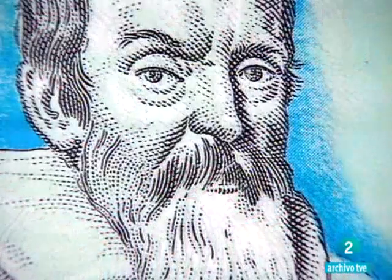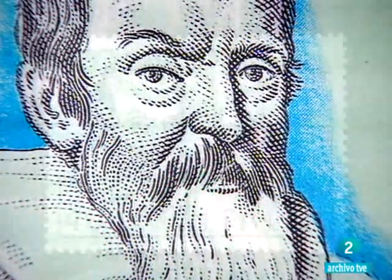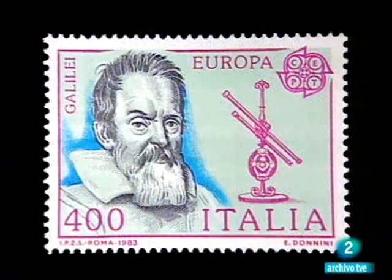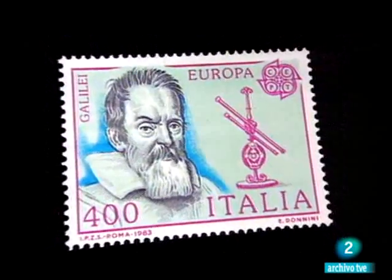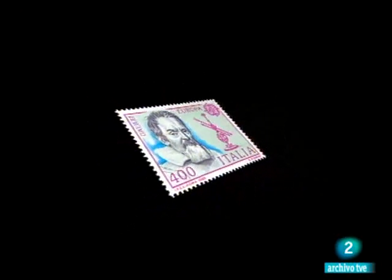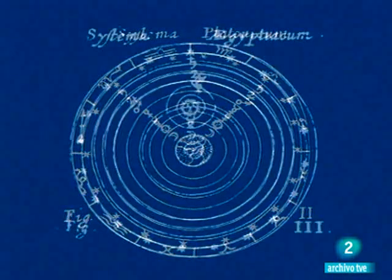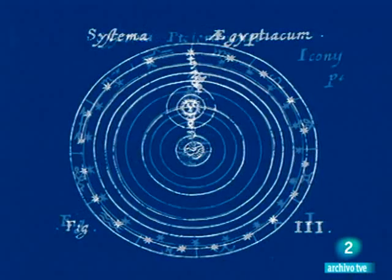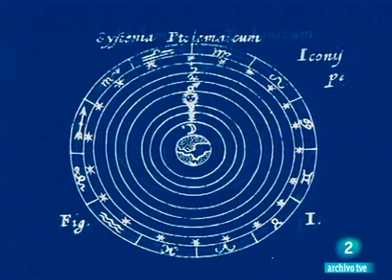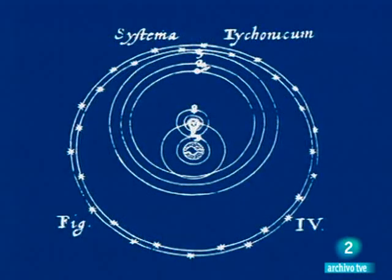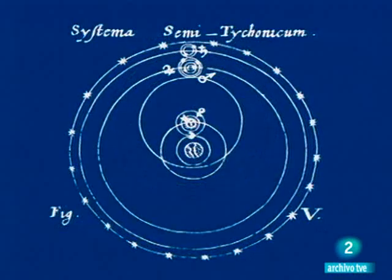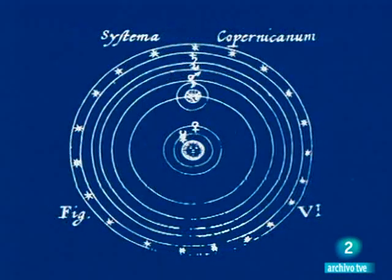Más tarde, Galileo lo expresará de forma contundente. El universo es un gran libro escrito en el lenguaje de las matemáticas, siendo sus caracteres triángulos, círculos y otras figuras geométricas, sin las cuales es humanamente imposible comprender una sola palabra. Sin ellos, sólo se conseguirá vagar por un oscuro laberinto. Desde Platón, la historia de la ciencia será la búsqueda de ese modelo geométrico, de esas leyes que controlan el funcionamiento del cosmos, la búsqueda de ese orden inmutable capaz de explicar todos los fenómenos naturales. La comprensión y el dominio de la naturaleza al alcance del ser humano.